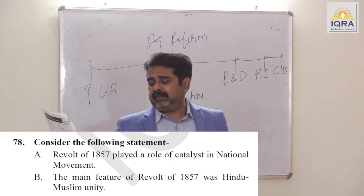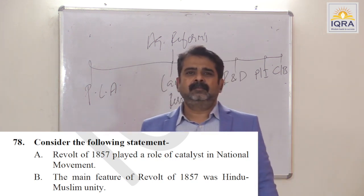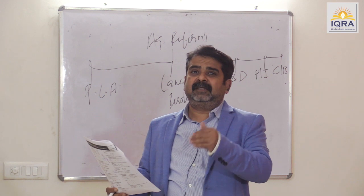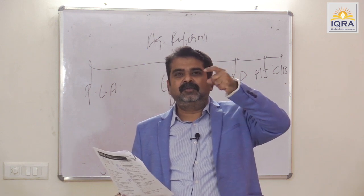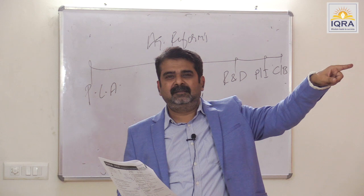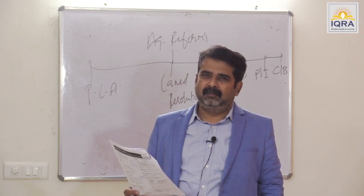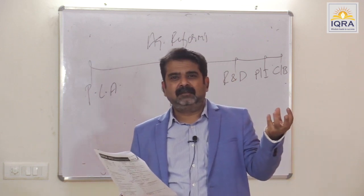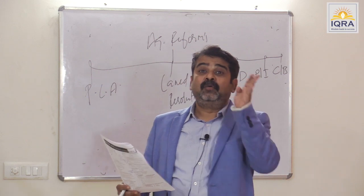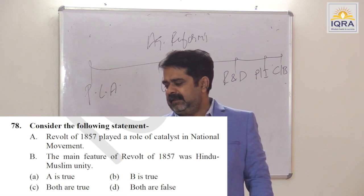Revolt of 1857 played the role of a catalyst in the national movement — true. After 1857, when the national movement starts, the characters of the revolt were declared heroes for the second phase of freedom struggle — that is why V.D. Savarkar calls it the First War of Independence. The main feature of the Revolt of 1857 was Hindu–Muslim unity. Both are true. Answer is C.